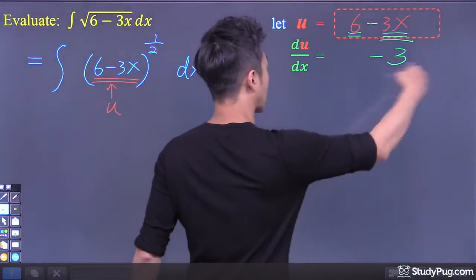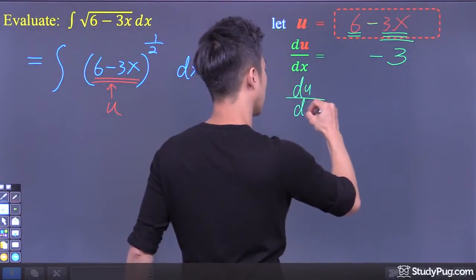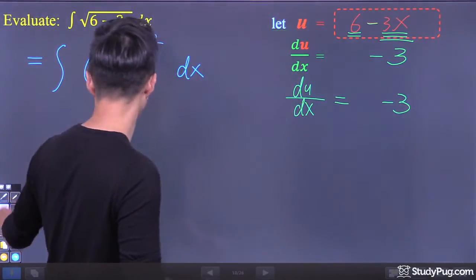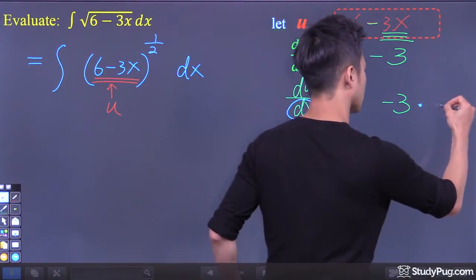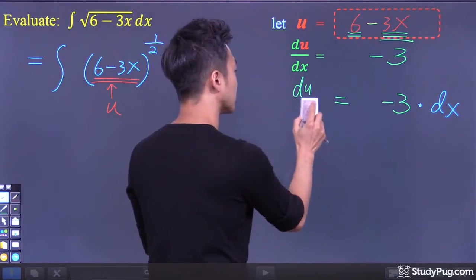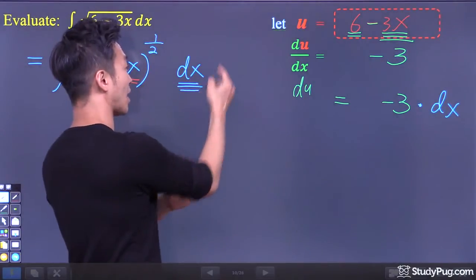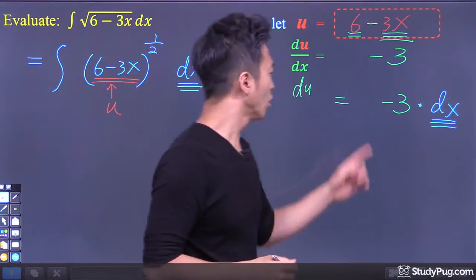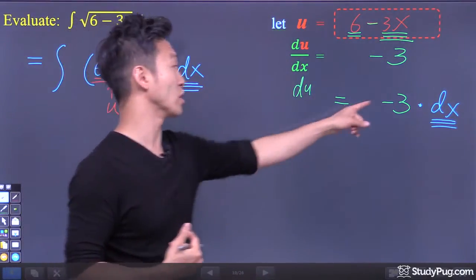So du/dx is equal to negative 3. First of all, let's move dx to the other side of the equation. That's good — and that's actually what we are looking for, because we have this dx in our integrand. However, do we see negative 3 in our integrand? No. So let's try to get rid of it.